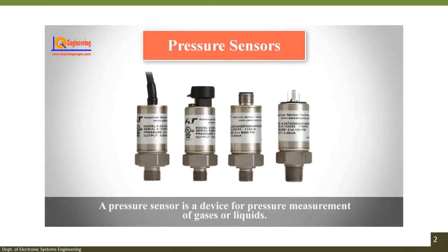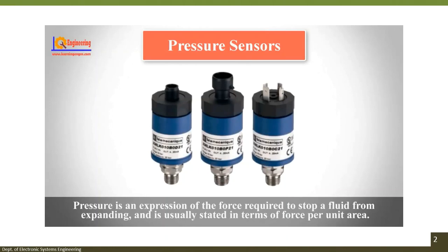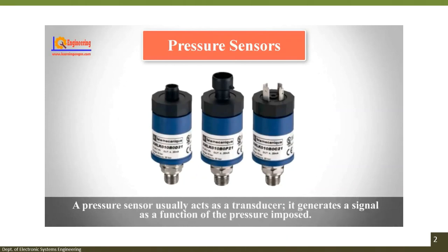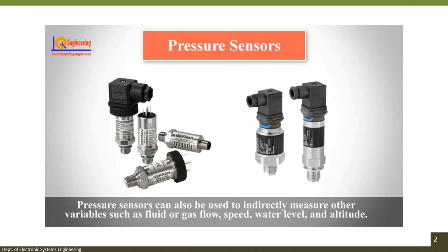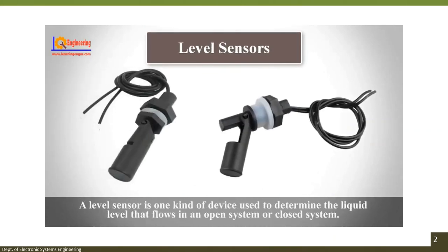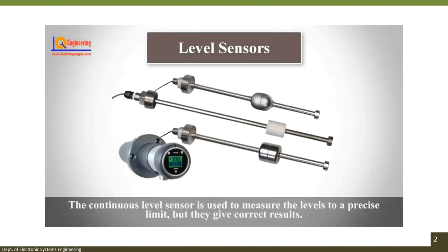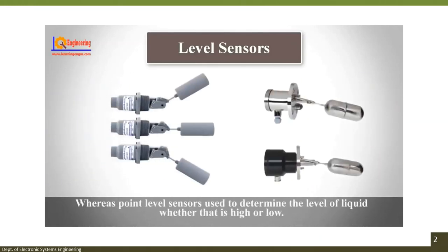A pressure sensor is a device for pressure measurement of gases or liquids — pressure is the force required to stop a fluid from expanding, stated in terms of force per unit area. A pressure sensor acts as a transducer, generating a signal as a function of the pressure imposed. It can also indirectly measure fluid or gas flow, speed, water level, and altitude. A level sensor determines the liquid level in open or closed systems, with continuous and point level measurement types.